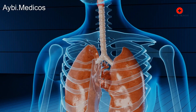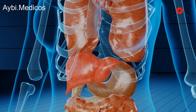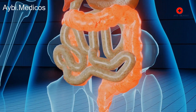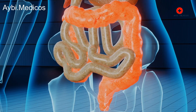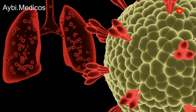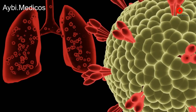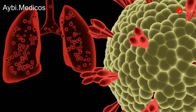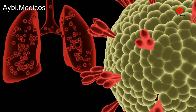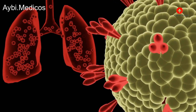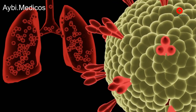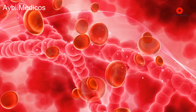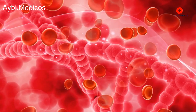Loss of elasticity: smoking causes the walls of the air sacs in the lungs — alveoli — to lose their elasticity. This elasticity is crucial for the lungs to expand and contract properly during breathing. Loss of elasticity reduces lung capacity and makes it harder for the lungs to efficiently exchange oxygen and carbon dioxide.